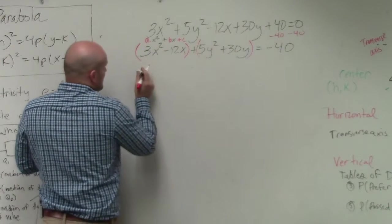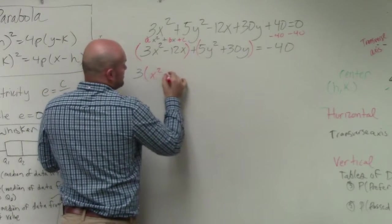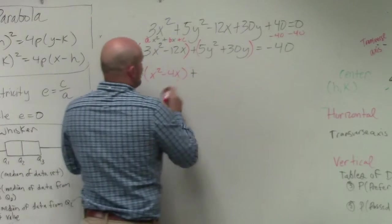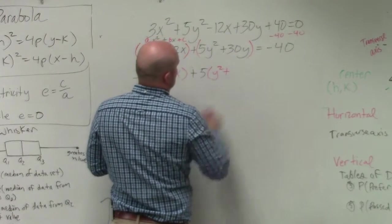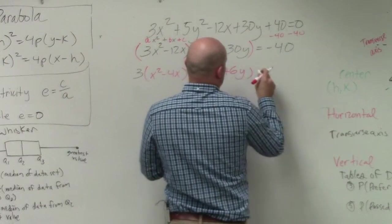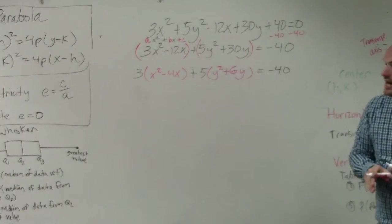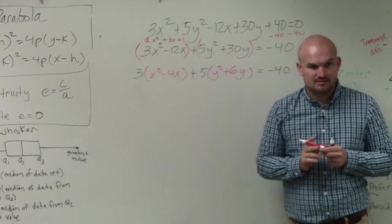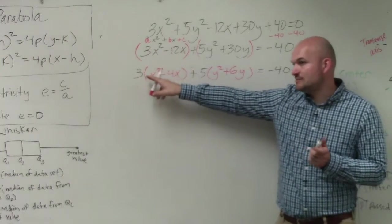So what I'm going to do is factor out the 3. By factoring out the 3, I'm now left with x² minus 4x plus... then factor out the 5: y² plus 6y. Now do you see how that number in front of my quadratic is now 1? Everybody see how that a is 1?